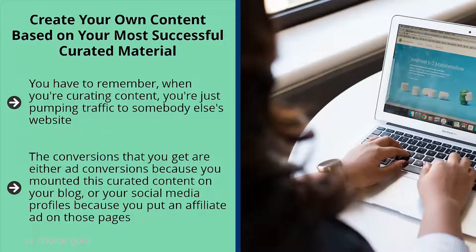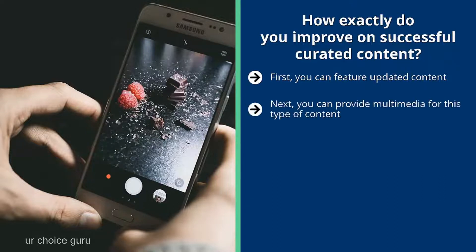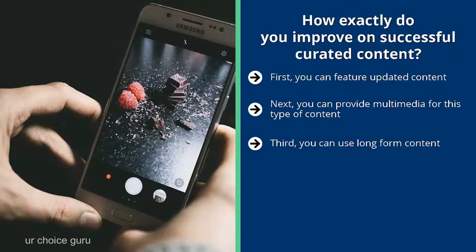When you create your own content based on successful curated pieces, you build traffic to your site. How exactly do you improve on successful curated content? First, you can feature updated content by making sure your version has the most up-to-date information. Next, you can provide multimedia — for example, instead of just a text list of the best dog houses, show actual videos and pictures. Third, you can use long-form content. Search engines reward longer pieces of content with more traffic, because more keywords trigger Google to send targeted traffic.